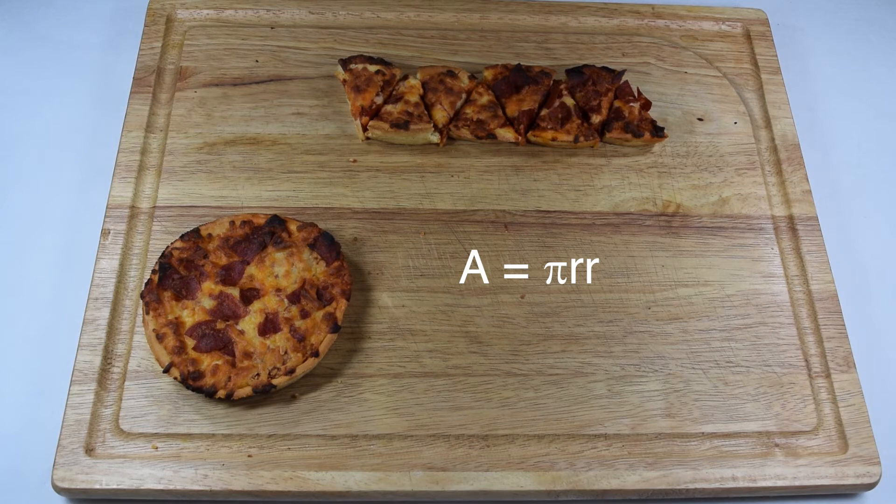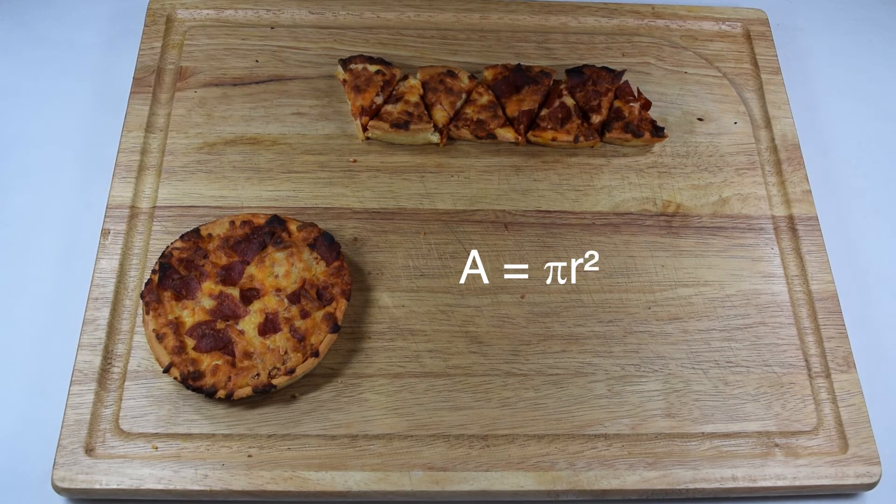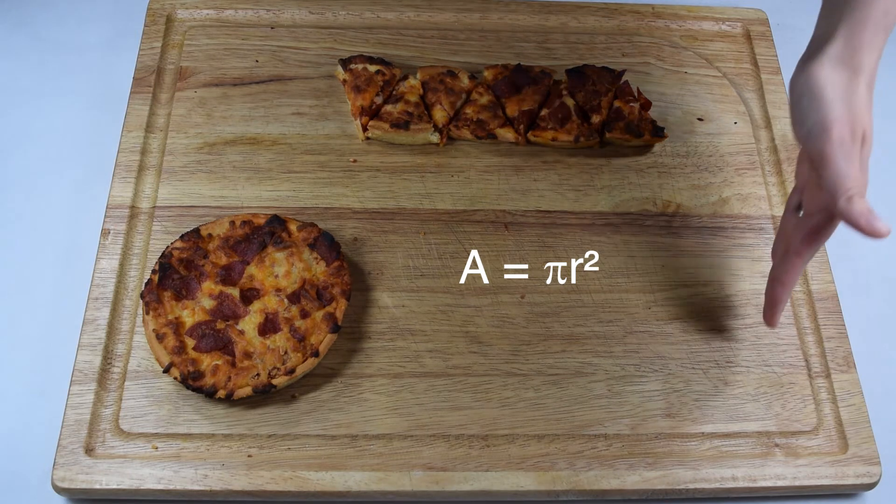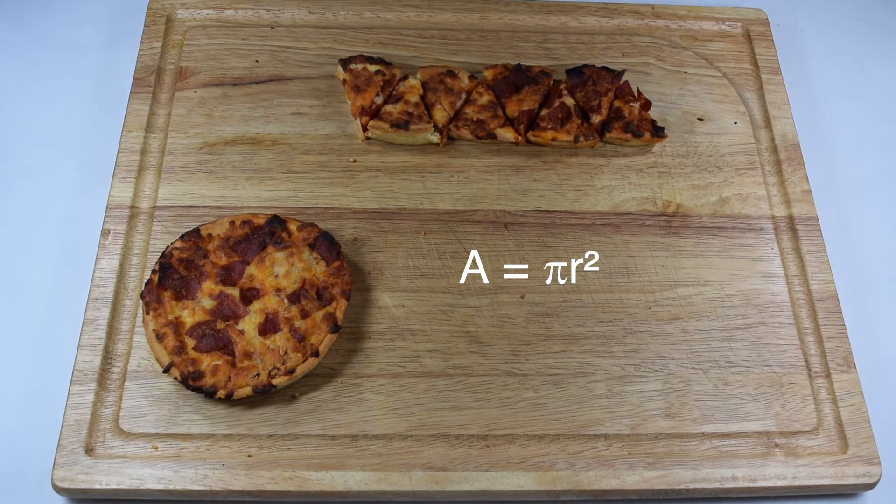We know that when we multiply a value times itself, it's the same as raising it to the exponent of 2. So we can change radius times radius to radius squared. This means we're at our final equation of area of a circle is pi times radius squared.